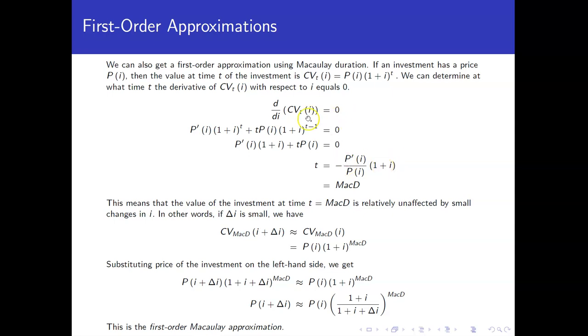So let's solve that. Take the derivative, we'll need to use a product rule. That's what this computation is doing here. We here are just dividing both sides by 1 plus i to the t minus 1. And then solve for t, you get the negative of the change in price over the price times 1 plus i. Well, if I ignore the times 1 plus i piece, we have modified duration. And remembering that if I take the modified duration and multiply by 1 plus i, I get the Macaulay duration.